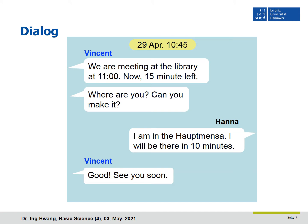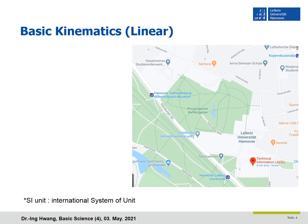First of all, I would like to show an example where kinematics is used in daily life. There is an example dialogue: 'We are meeting at the library at 11. Now 15 minutes left. Where are you? Can you make it?' 'I am in Haumanza. I will be there in 10 minutes.' 'Good! See you soon!' Here, Hanna expected that it took about 10 minutes to get to the library from Haumanza. What is the ground of that expectation? There must be a simple kinematics for walking distance and velocity. Now we will see how Hanna can get to the library in 10 minutes, and we will look at the concept of kinematics in detail.